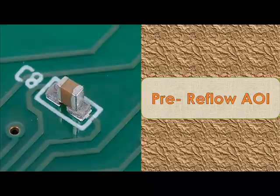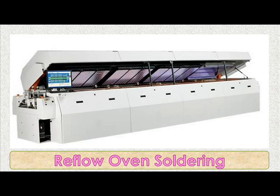After pre-reflow AOI, the board moves into reflow oven soldering stage. Reflow soldering is the most widely used method of attaching surface mount components to printed circuit boards. The boards first enter a preheat zone where the temperature is gradually and uniformly raised to prevent thermal shock. They then enter a zone where the temperature is high enough to melt the solder particles in the solder paste, bonding the component leads to the pads on the circuit board. The surface tension of the molten solder helps keep the components in place, and if the solder pad geometries are correctly designed, surface tension automatically aligns the components on their pads.